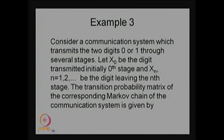This example discusses a communication system in which transmission takes place using digits 0 and 1 over several stages. We define the random variable x0 as the digit transmitted initially at the 0th step. At any nth step, the transmitted digit will be either 0 or 1, so only two possibilities can occur. The collection of xn over n forms a stochastic process because you never know which digit is transmitted at the nth stage.